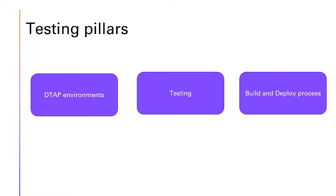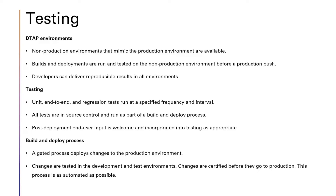Testing is another pillar. The DTAP environments are non-production environments that mimic production. Builds and deployments are run and tested on non-production before a production push. Developers can deliver reproducible results in all environments. Unit, end-to-end and regression tests run at a specified frequency and interval. All tests are in source control and run as part of a build and deploy process. Post-deployment end-user input is welcomed and incorporated into testing. A gated process deploys changes to production; changes are tested and certified before going to production, and this process is as automated as possible.